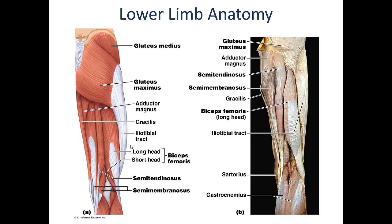The other three muscles — semitendinosus, semimembranosus, and the long head of the biceps femoris — span the hip joint as well. So in addition to facilitating flexion of the knee, they can all three produce hip extension as well.